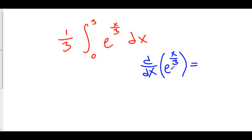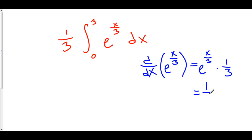So we've got the derivative of e to the x over three — and x over three is the same thing as one third x. The derivative of e to the stuff is e to the stuff times the derivative of the stuff. And the derivative of x over three is just one third. So the derivative of e to the x over three is one third e to the x over three. This means that the antiderivative of one third e to the x over three is e to the x over three.